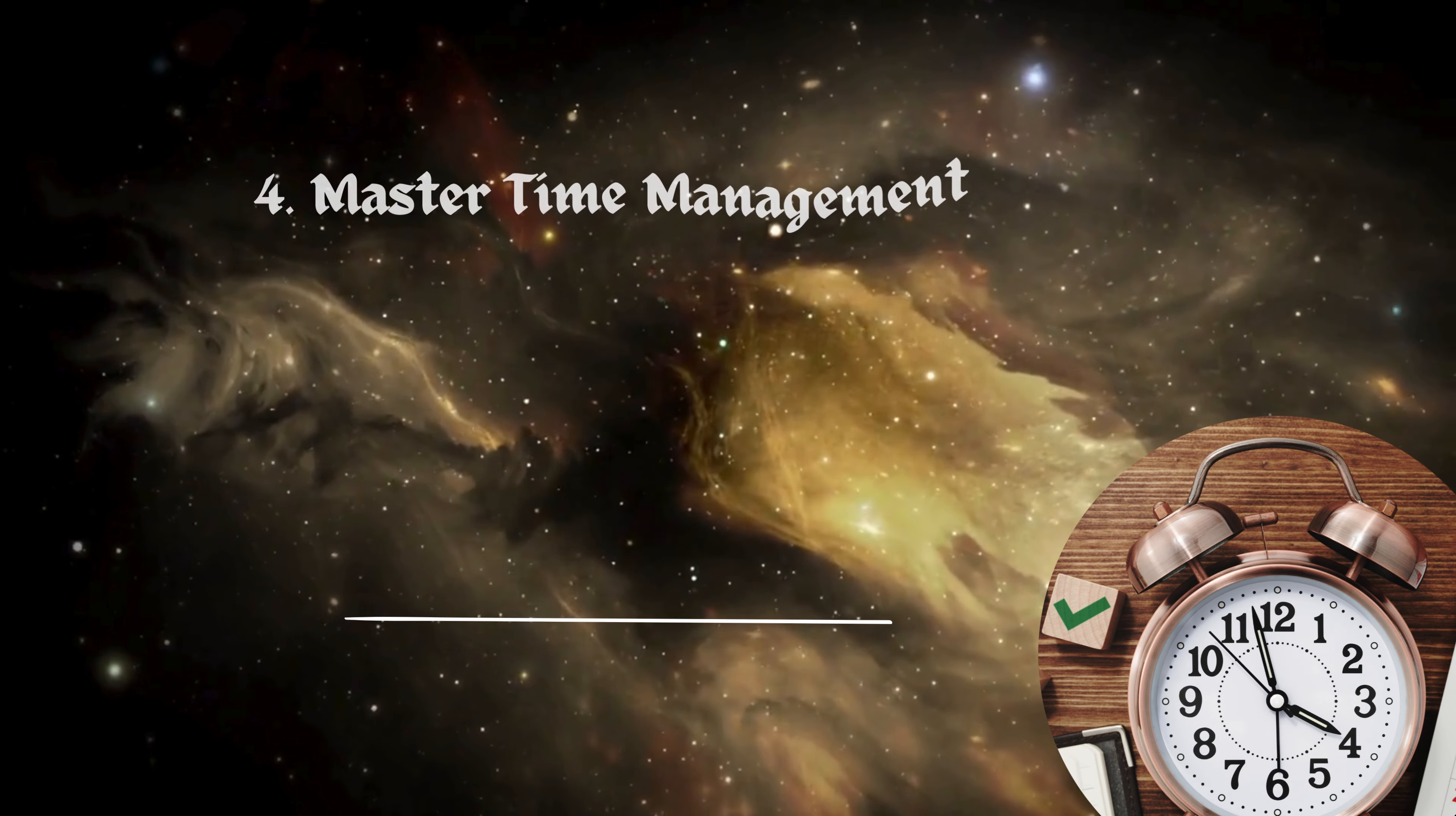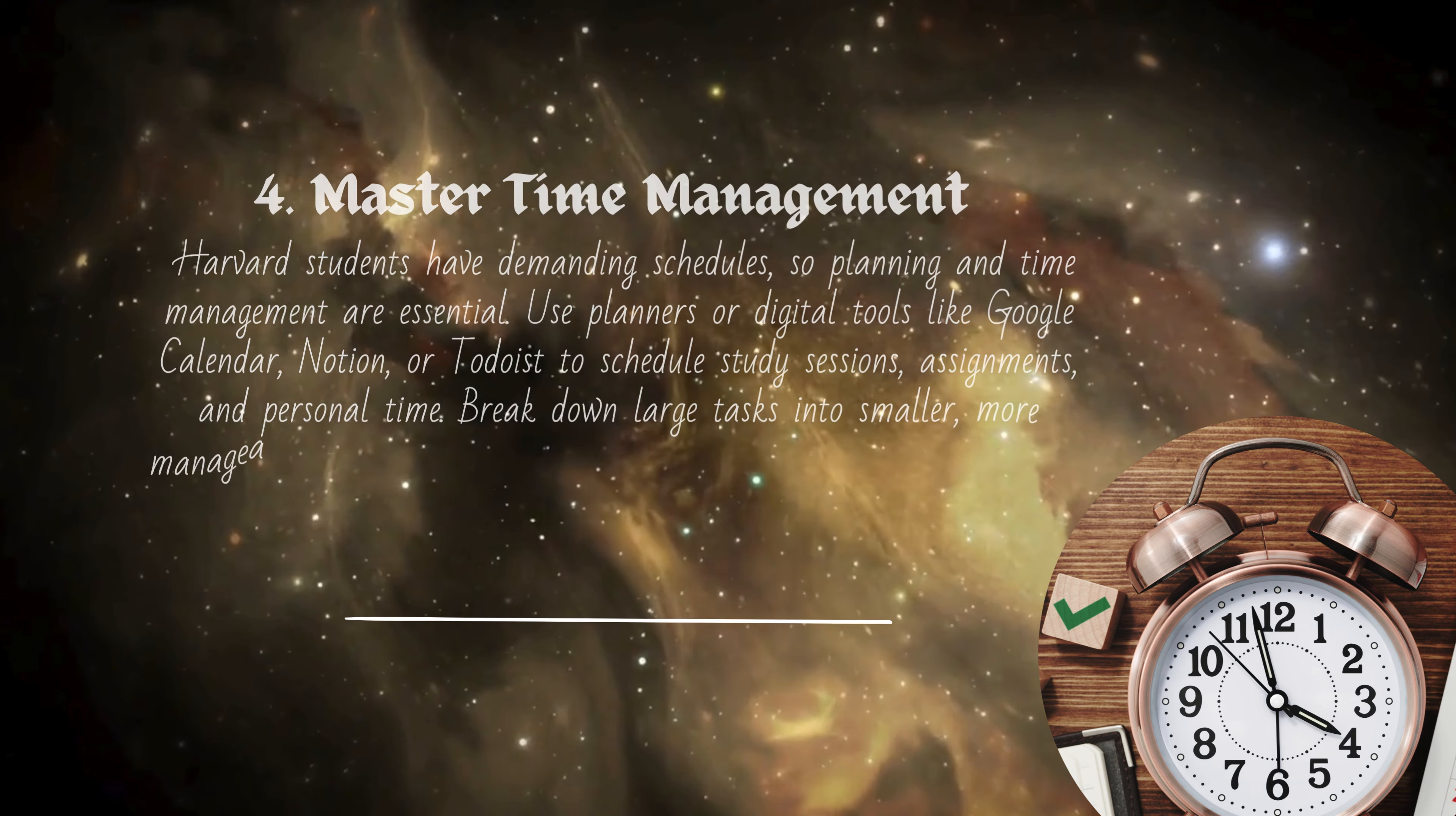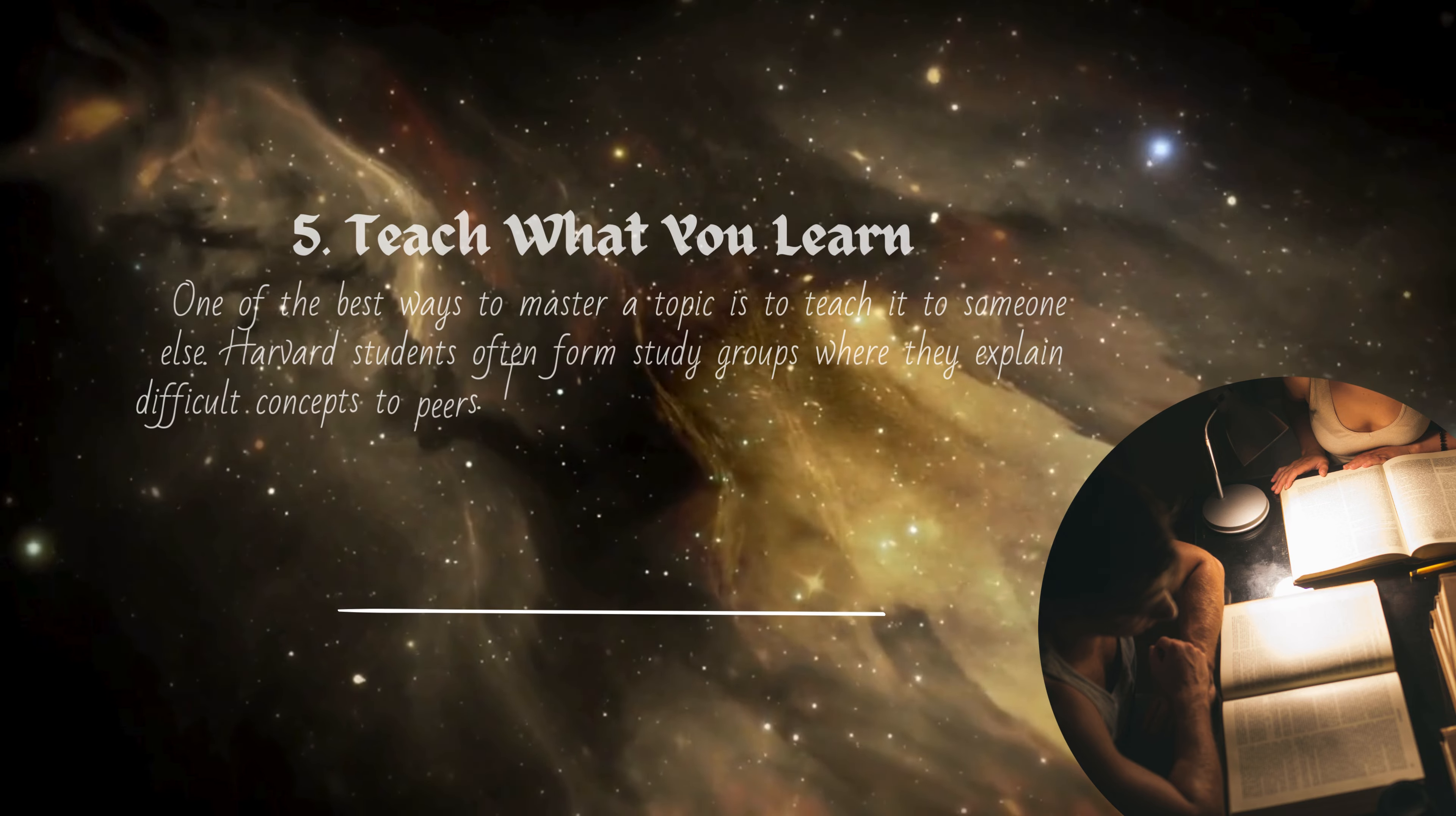Four: Master time management. Harvard students have demanding schedules, so planning and time management are essential. Use planners or digital tools like Google Calendar, Notion, or Todoist to schedule study sessions, assignments, and personal time. Break down large tasks into smaller, more manageable chunks and set deadlines to maintain consistent progress. Five: Teach what you learn. One of the best ways to master a topic is to teach it to someone else. Harvard students often form study groups where they explain difficult concepts to peers.